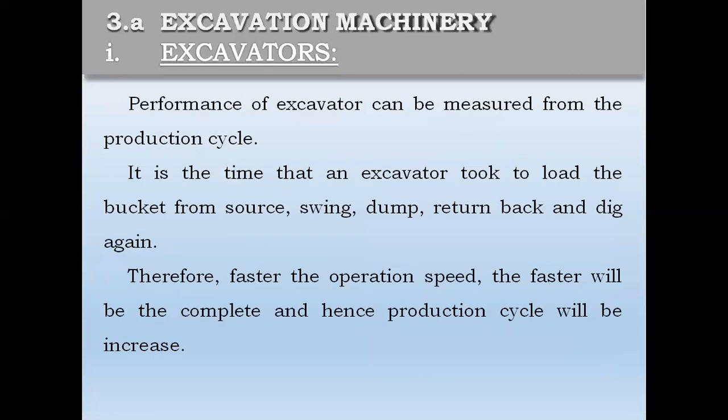The performance of an excavator can be measured from the production cycle. The production cycle is when you excavate — you dip the bucket and dump the material. That is one cycle. It is the time the excavator takes to load the bucket from the source, swing, dump, return back, and dig again. Therefore, the faster the operation speed, the faster the cycle is completed, and hence production output will increase.